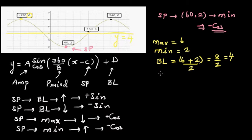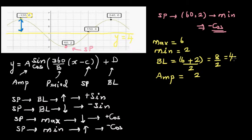The distance from the baseline to the maximum or minimum is called the amplitude. Since the baseline is 4 and the maximum is 6, the distance from 4 to 6 is 2. So the amplitude A is 2, and D (the baseline) is 4.